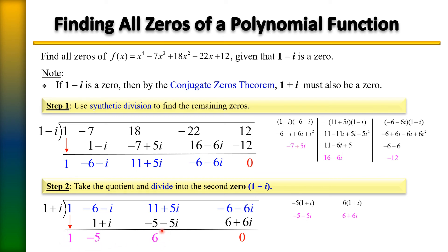Now we have our answer in a much more simplified form. The original polynomial was degree 4. After the first synthetic division (in blue) it became degree 3. After the second (in pink) it became degree 2. So x squared minus 5x plus 6 is our quotient from the last synthetic division.